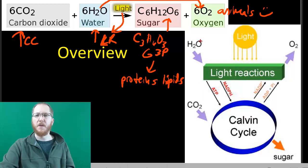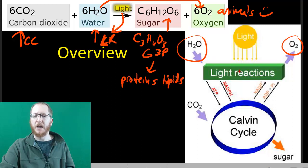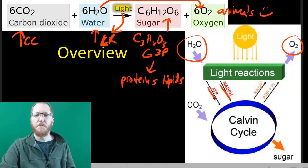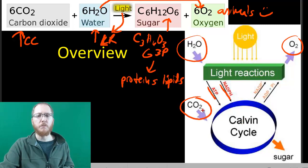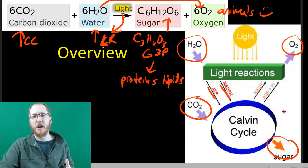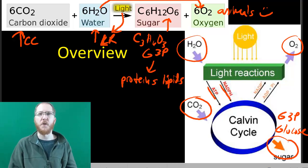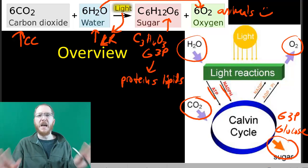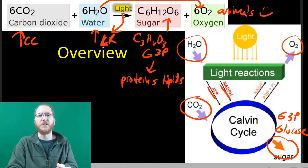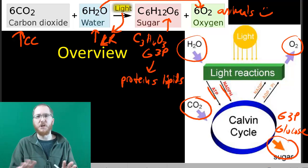H2O goes to the light reactions and O2 comes out. Light goes into the light reactions, and the purpose of the light reactions is to make NADPH and ATP — energy molecules needed by the Calvin cycle — to allow us to take CO2 and convert it into sugar. Depending on context, that will be either G3P at the end of the Calvin cycle, or glucose after two G3Ps are joined together. That's it — we'll pick up with chemosynthesis later.